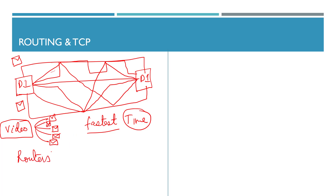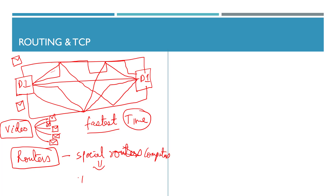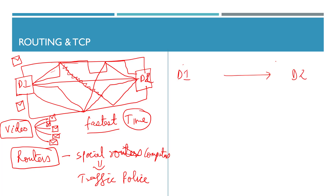Routers direct the flow of packets and can reroute them depending on congestion situations. Different packets may take different routes and arrive at different times. For example, when sending a video from one computer to another, the video is broken into many packets, those packets travel different paths, and they all eventually arrive at the destination device.